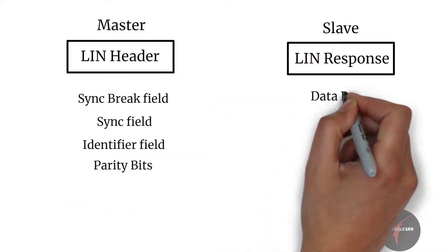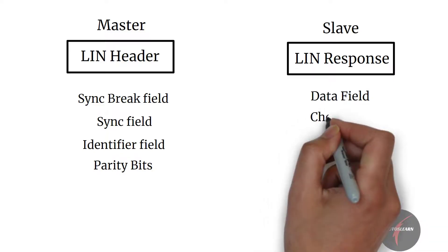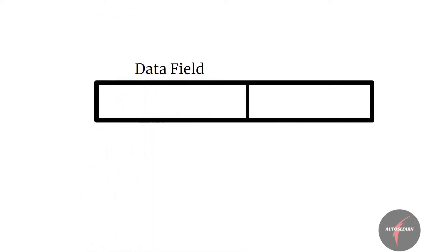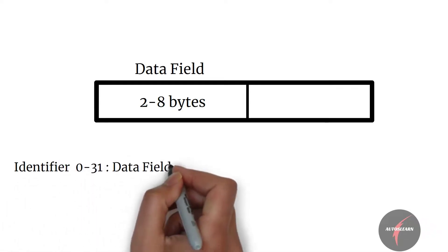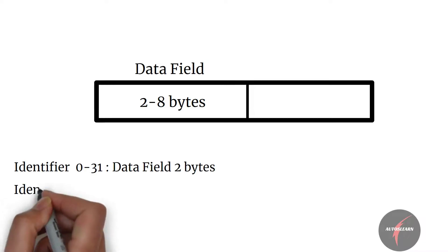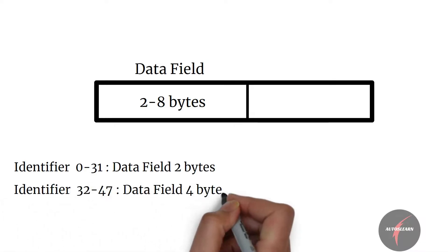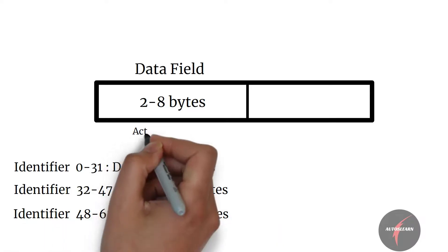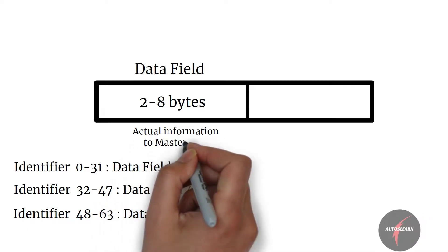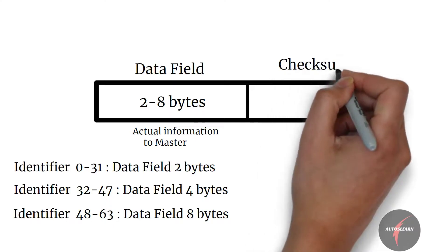The slave response consists of two fields: the data field and the checksum. The data field consists of the slave's response to the master by transmission of 2, 4, or 8 bytes of data. Data length is customizable but typically linked to the identifier — for example, identifiers from 0 to 31 send 2 bytes, 32 to 47 send 4 bytes, and 48 to 63 send 8 bytes. The data bytes contain the actual information the LIN node wants to communicate to the master, and the checksum field ensures the validity of the LIN frame.